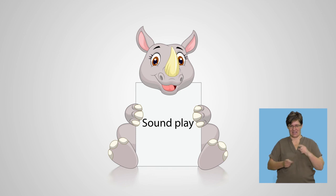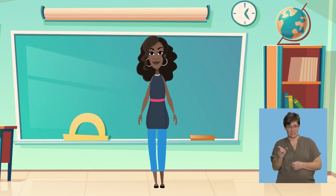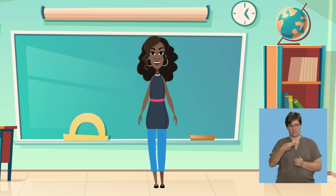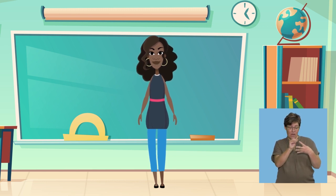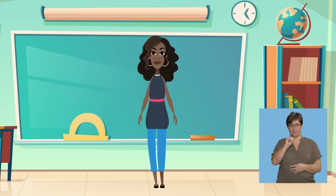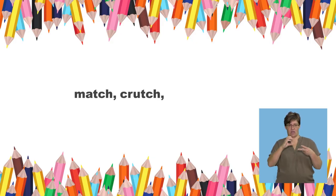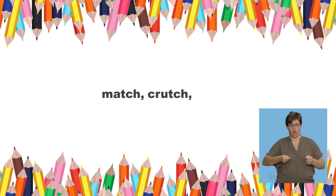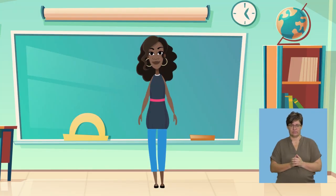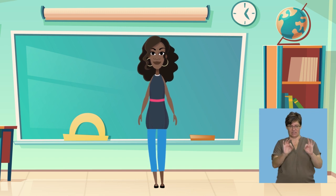Sound play. Listen for the word that begins with the ch sound. You will hear four words; one word does not have the ch sound. You need to repeat the words with the sound. Ready? I say: Match, Crutch, Bridge, Botch. You say: Match, Crutch, Botch. Perfect — you've got the sound just right.